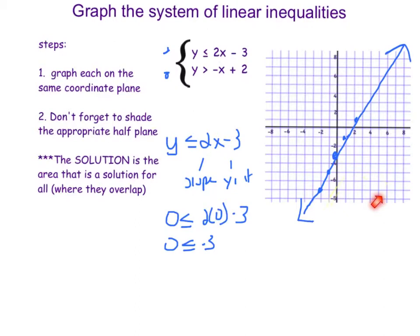So I'm going to grab my best thing I can do for a highlighter and shade down here. All right, now we'll graph our next equation. Here, it starts at 2, and my slope is negative 1.